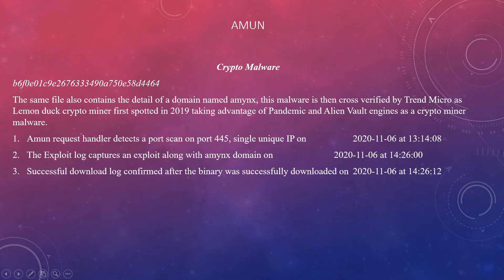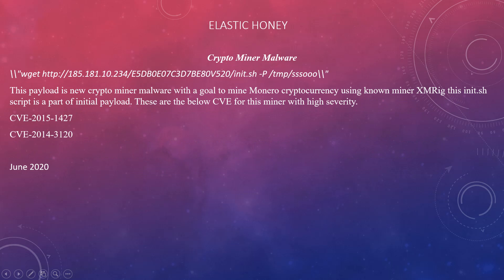Another sensor covered is Amun. A captured hash was confirmed by VirusTotal and cross-verified by TrendMicro as the LemonDuck crypto miner, first spotted in 2019 and taking advantage of the pandemic. AlienVault has also identified it as crypto malware. Amun detects port scans via its request handler. For this attack, a single IP performed a port scan on port 445 at a specific timestamp. The exploit.log captures the exploit attempt using an identified MNX domain, and once the binary is successfully downloaded, the successful download log confirms and records it.